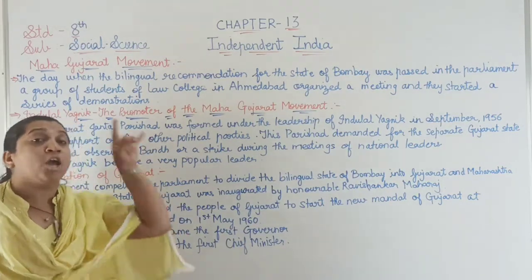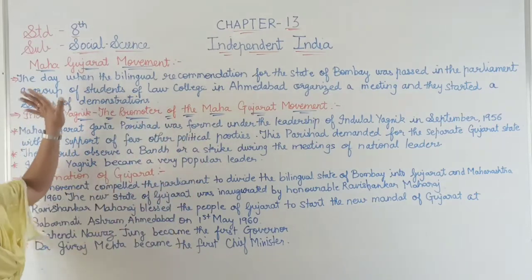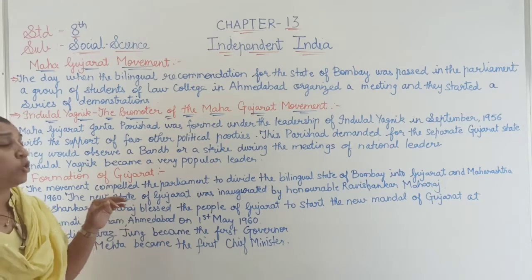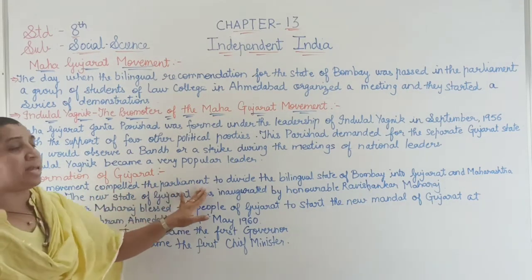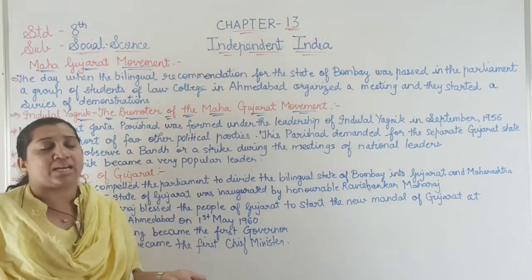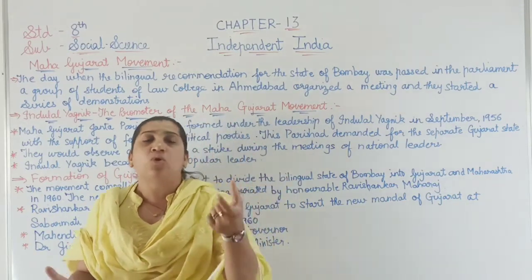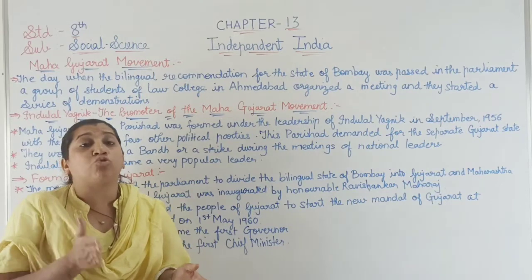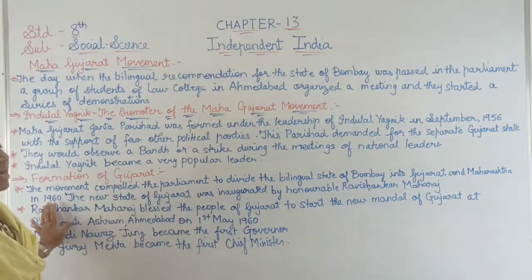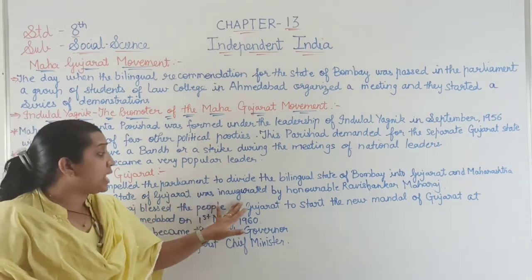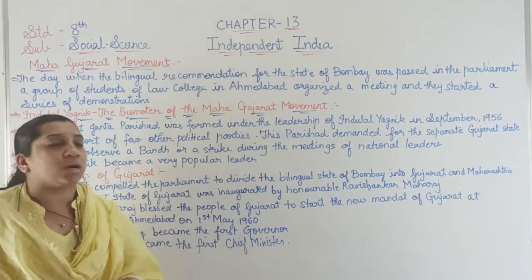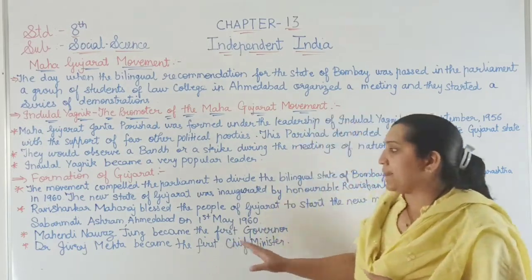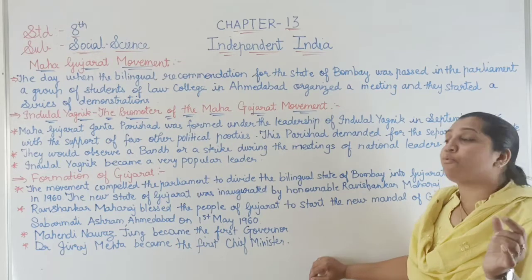The movement compelled the parliament to divide the bilingual state of Bombay into two parts — Gujarat and Maharashtra. Gujarat was for the Gujarati-language people and Maharashtra for the Marathi-language people. Bombay was divided into two parts in the year 1960. The new state of Gujarat was inaugurated by the honorable Ravi Shankar Maharaj, who blessed the people of Gujarat at the Sabarmati Ashram in Ahmedabad on 1st May 1960.